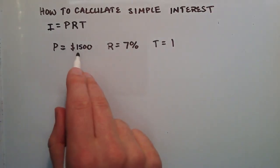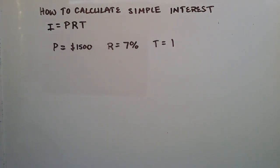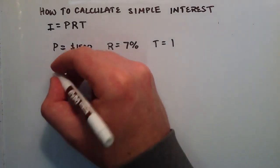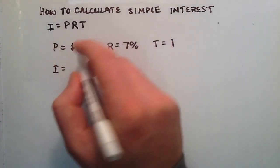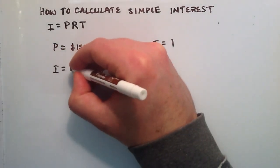So we're investing $1,500 at a return rate of 7% for 1 year. To find the amount of interest that we will make in this 1 year period, we just simply plug these numbers into the simple interest equation. So I equals PRT.